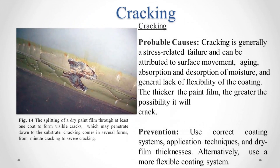Cracking. Probable causes: cracking is generally a stress-related failure and can be attributed to surface movement, aging, absorption and desorption of moisture, and general lack of flexibility of the coating. The thicker the paint film, the greater the possibility it will crack. Prevention: use correct coating systems, application techniques, and dry film thicknesses. Alternatively, use a more flexible coating system.